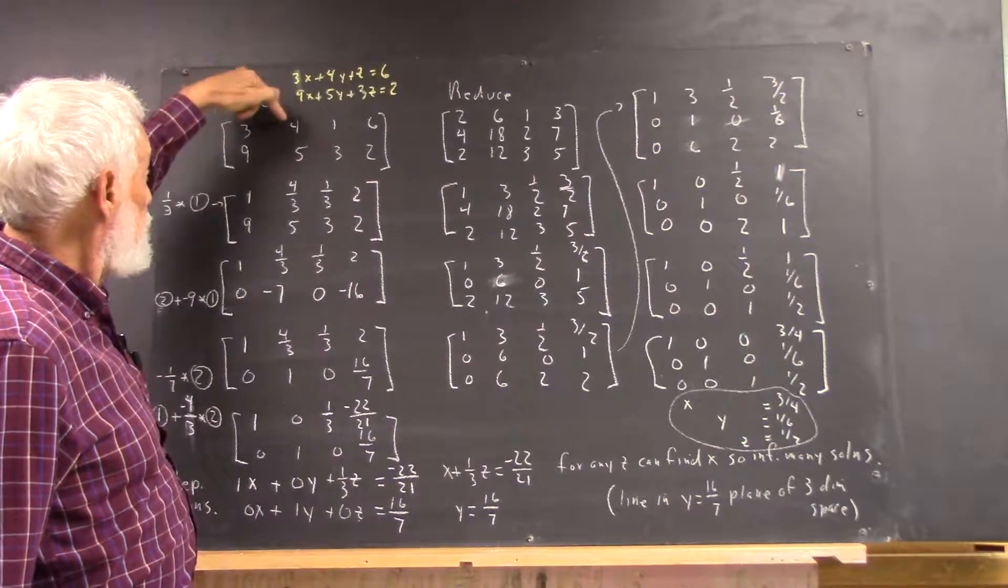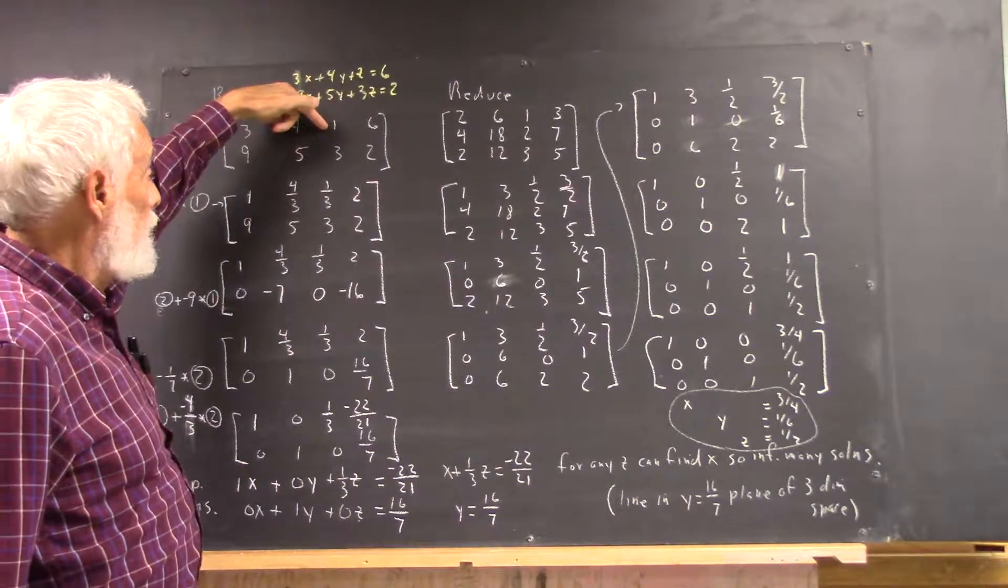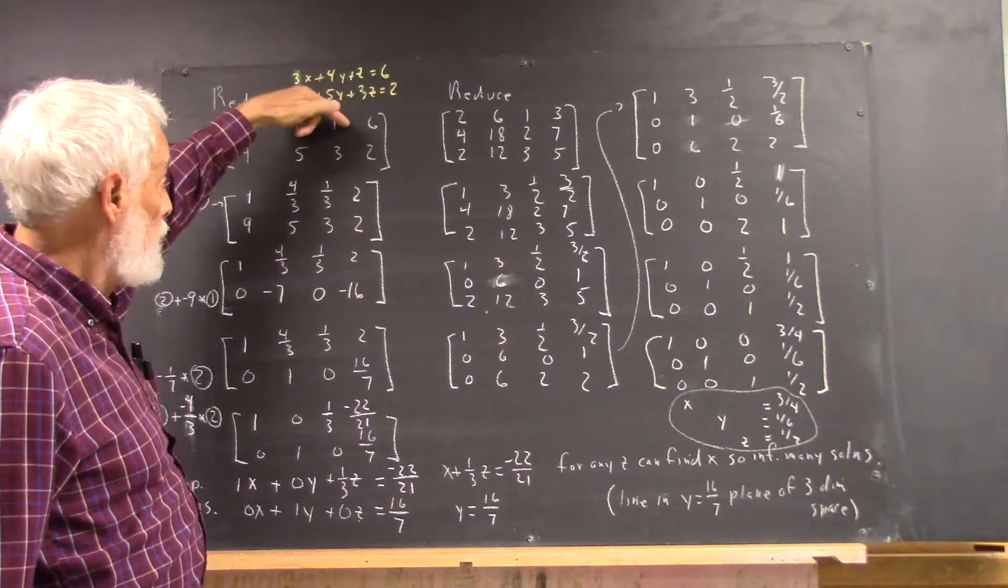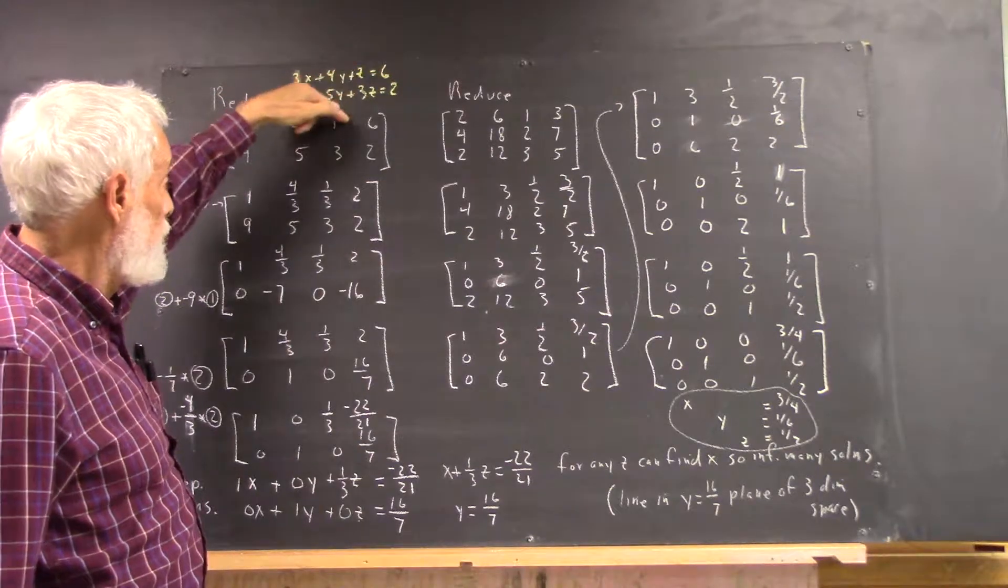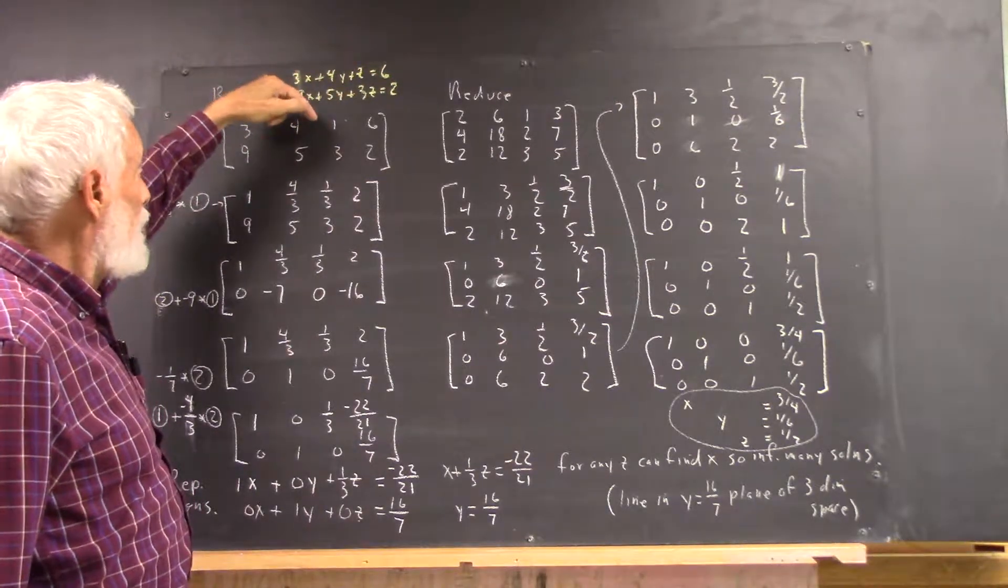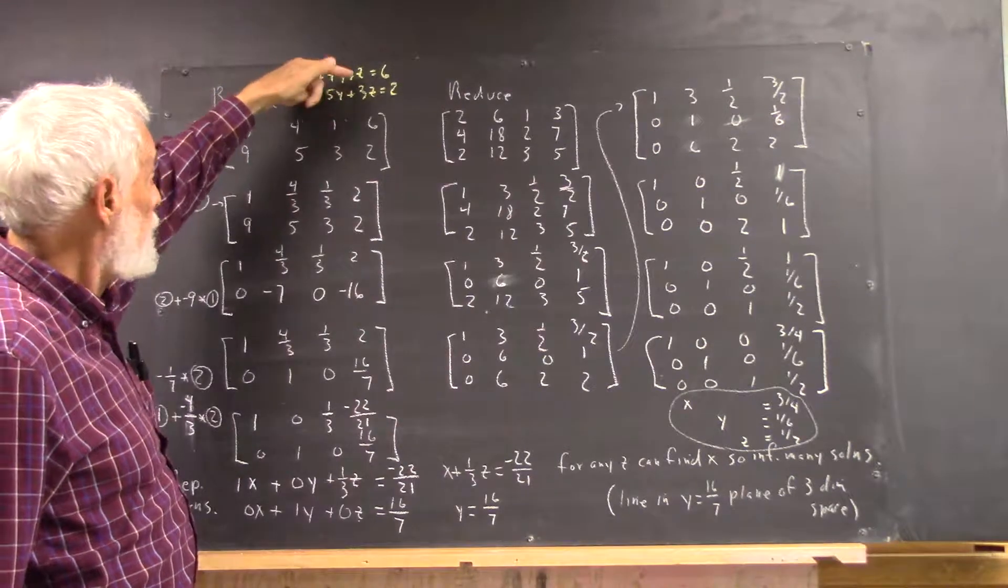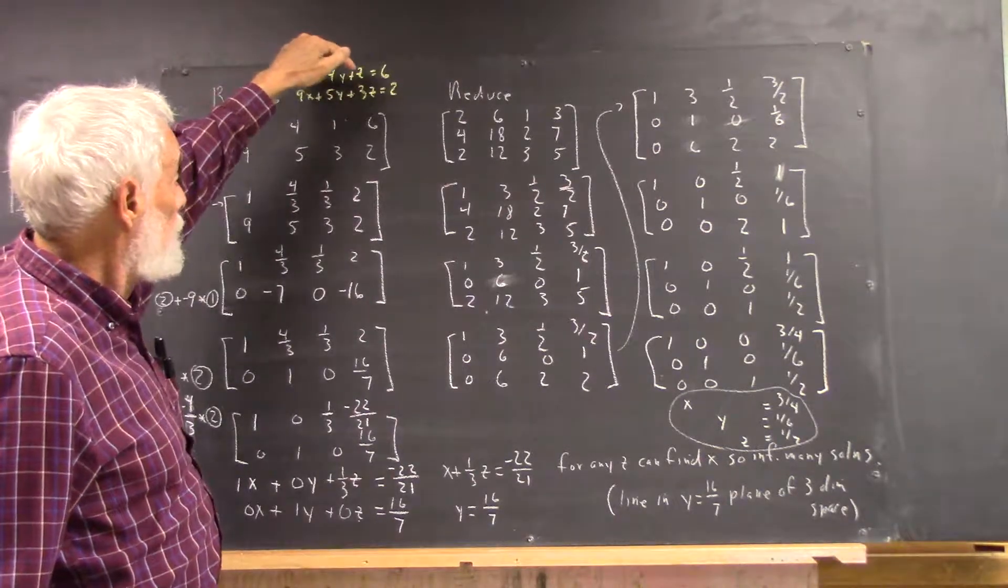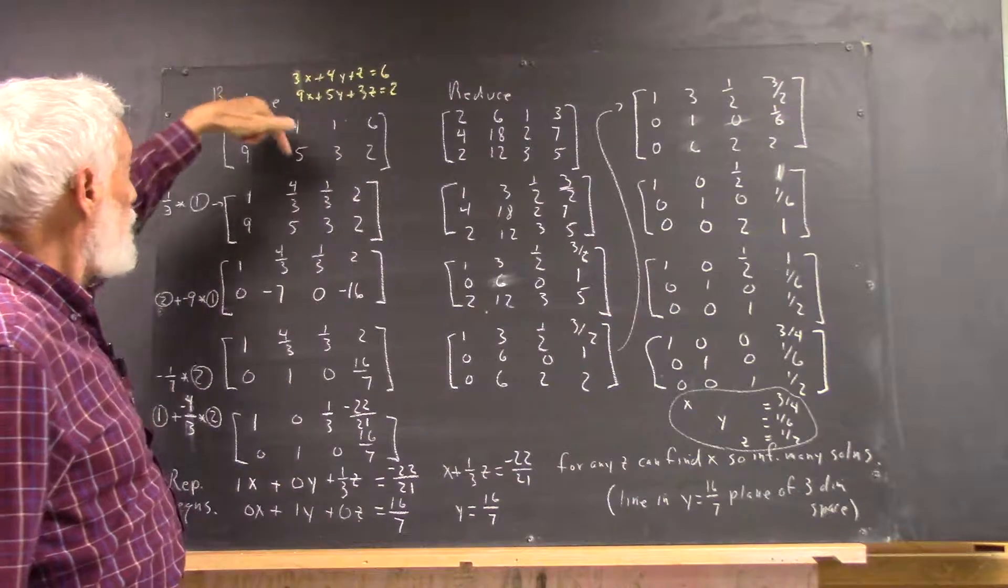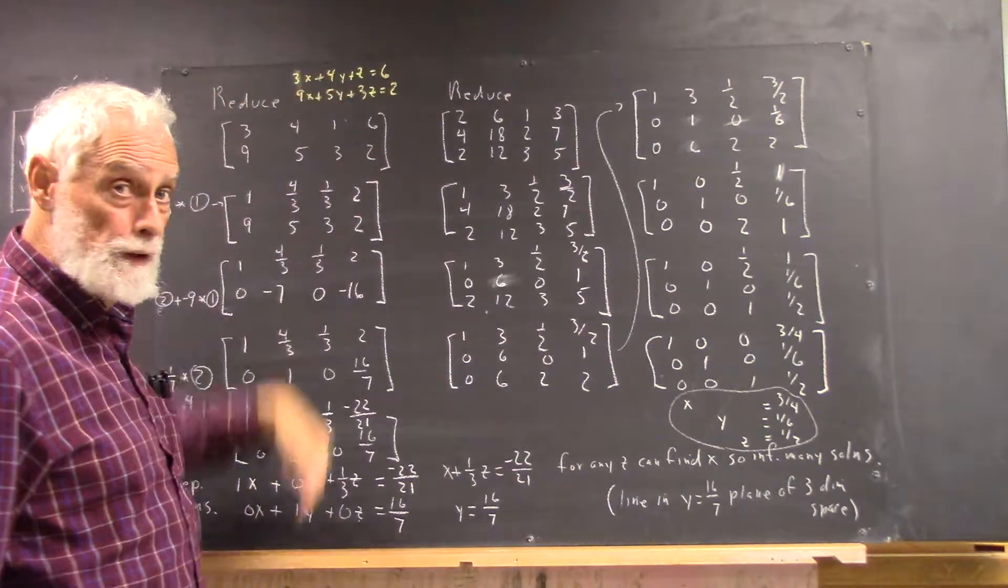3x plus 4y, and we have another number here before the equal sign, and the 6 is on this side of the equal. Well, alphabetically, let's call this variable z. 3x plus 4y plus z equals 6. 9x plus 5y plus 3z equals 2.